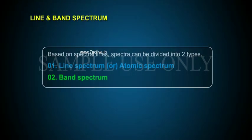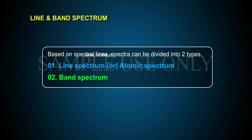Line and Band Spectrum: Based on spectral lines, spectra can be divided into two types. 1. Line spectrum or atomic spectrum, and 2. Band spectrum.